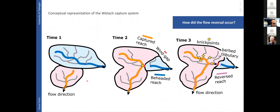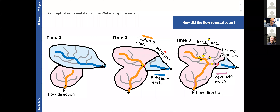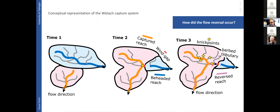This leads me to a conceptual representation of what I believe is happening: we have a lateral interception by the capturing reach, forming a wind gap near the capture point, and then a state representing today, where the wind gap is offset from its original position. We see barbed tributaries, and nick points that migrated upstream in each one of the tributaries, along with the reversed stream.